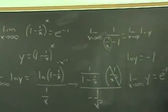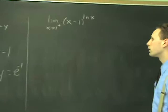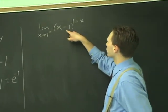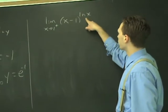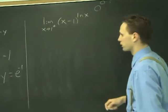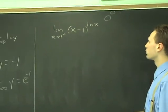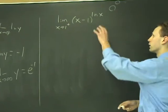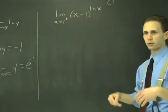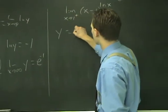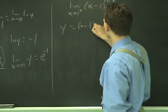Next example. Very similar. As x approaches one from the right, you try to plug in one and you'll get zero to the zero. And zero to the zero is indeterminate. Could be anything. So, L'Hôpital's rule. But you've got to go through that process first. It's one of the exponential ones. We have to call it a variable. We'll call it y. And the y equals (x - 1)^(ln x).